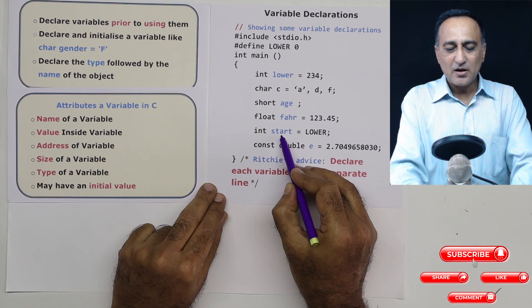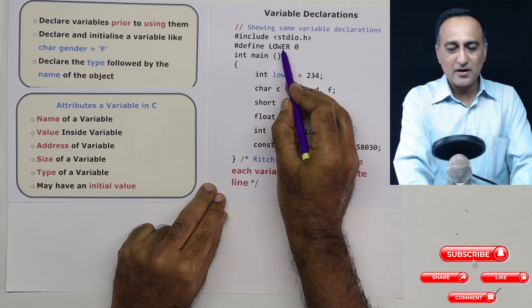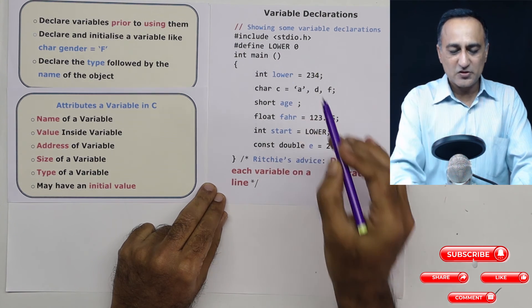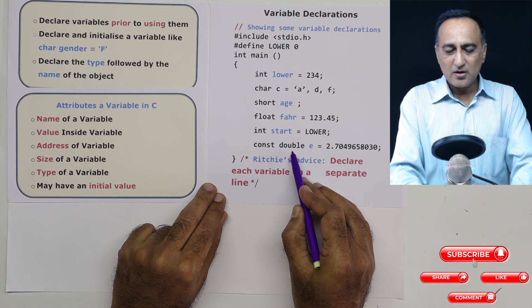This is a floating type of variable I've initialized it to 123.45. In start, I've initialized it to this particular value. So during the preprocessor run, it will replace lower with zero.